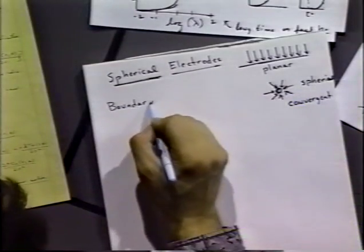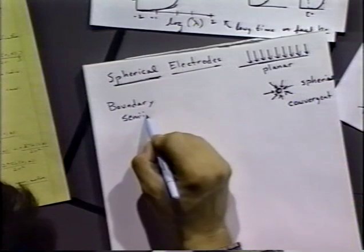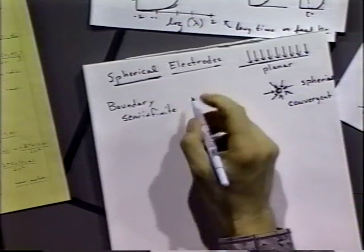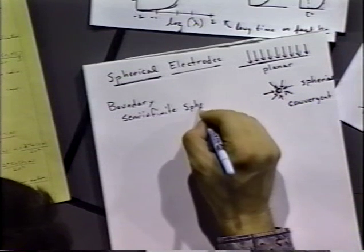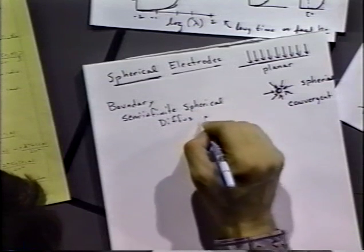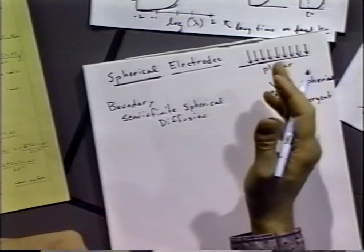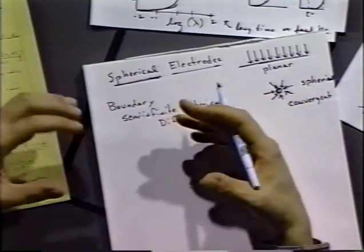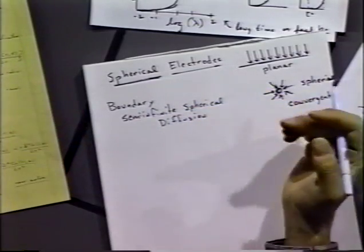The boundary conditions are appropriate for what we call semi-infinite spherical diffusion. That's semi-infinite again because we've not limited the size of the source of material — the material can diffuse from an infinite distance away, so there are no walls at the end of our experiment. Just like semi-infinite planar diffusion, we have semi-infinite spherical diffusion.